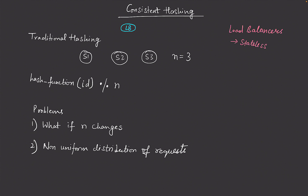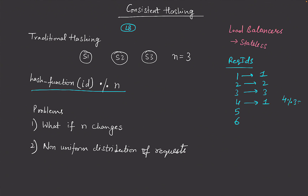One way is to take a hash of the request ID and take a modulo of n. For demonstration purposes, let's say we have request IDs whose hash can range from one to six. So request one goes to server one, request two goes to server two, request three goes to server three, request four goes back to server one (since 4 mod 3 = 1), request five to server two, and request six to server three.